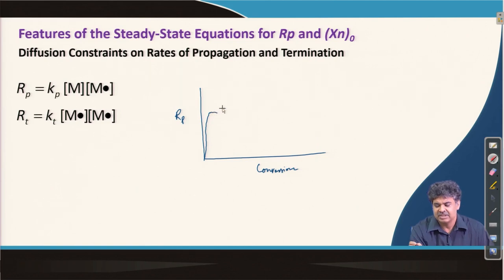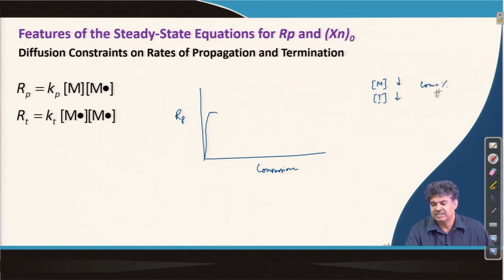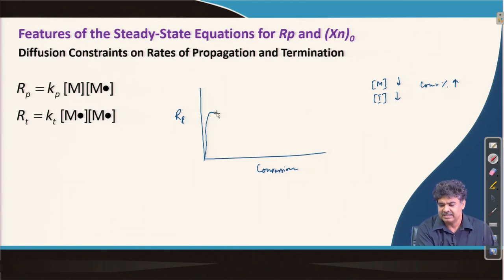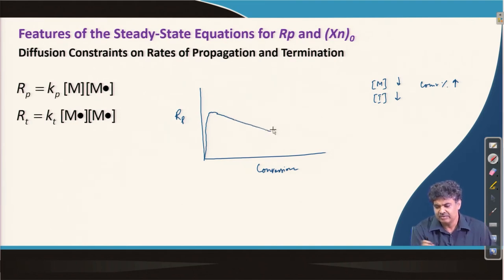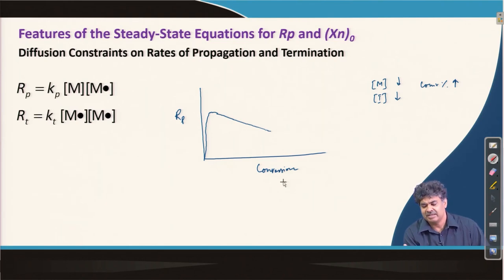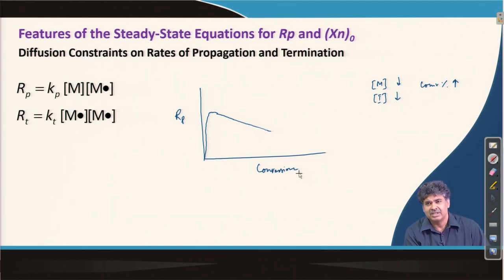If we plot rate versus conversion, after a short transient period a steady state is quickly reached. However, as conversion increases, both monomer and initiator concentrations decrease, so the steady-state rate should slowly and steadily decline. But at later stages, when conversion is very high, the reaction mixture contains a lot of polymer and viscosity of the medium becomes very high.